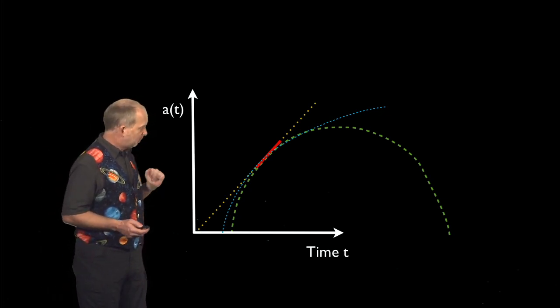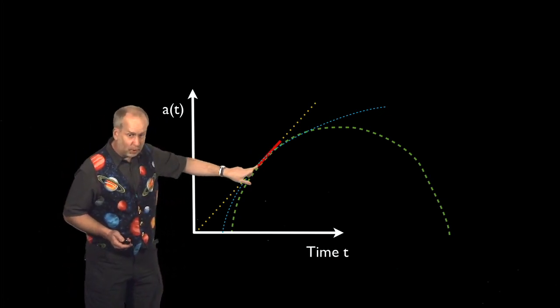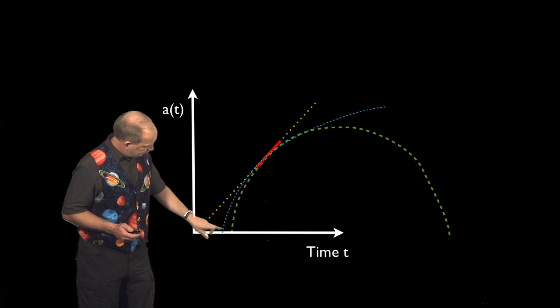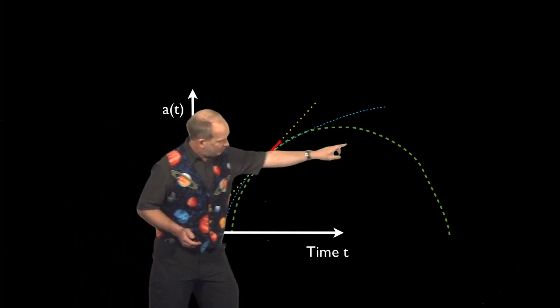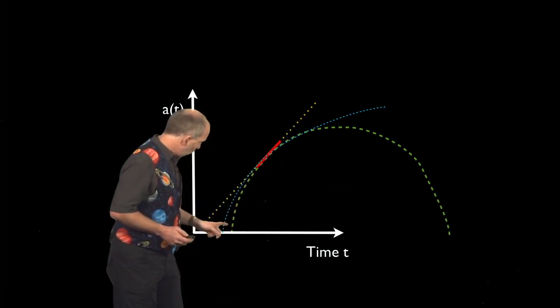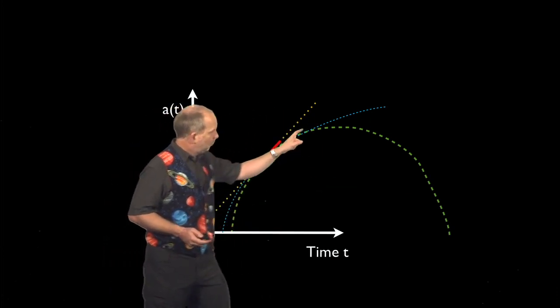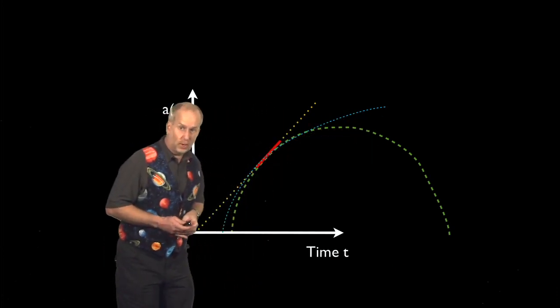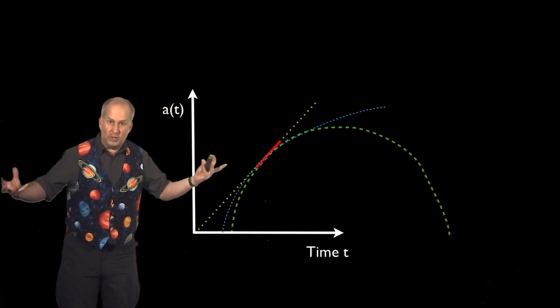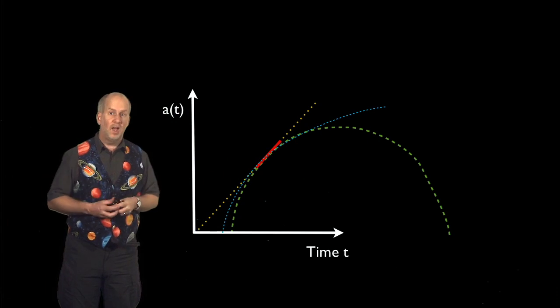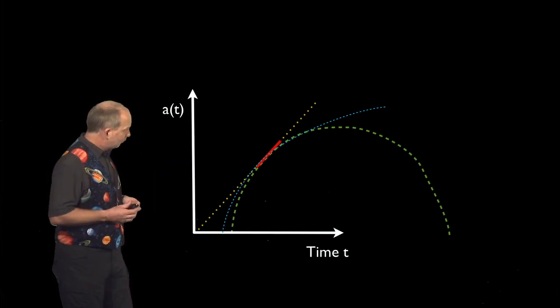Back in 1995 this was a big debate. We knew that space was expanding at the moment, and the question was: was it following the green line, slowing down quite a lot so it would come back for a big crunch, or was it following a blue line so it would keep expanding forever but always slowing down? Everybody assumed it had to slow down because, after all, gravity only attracts things and we knew of no other force.